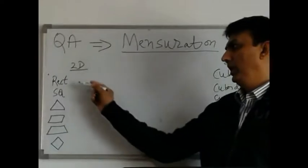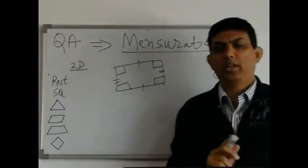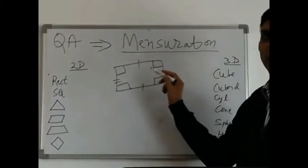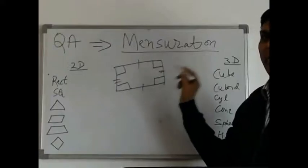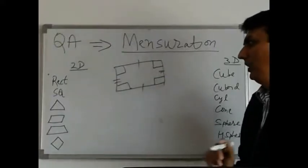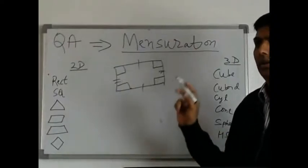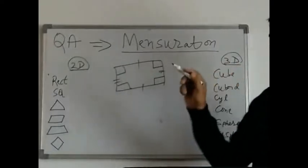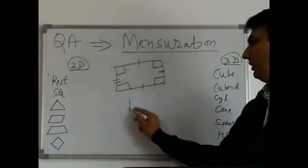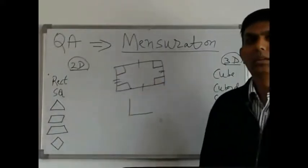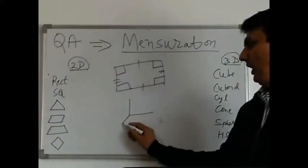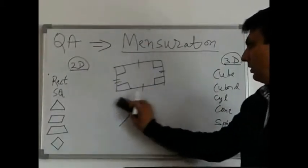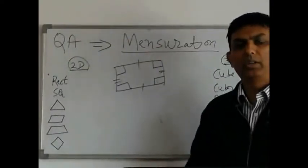Our first 2D figure is a rectangle. A rectangle is a four-sided figure in which opposite sides are of equal length and all four sides are at 90 degrees to each other. A 2D figure has only two dimensions, say length and breadth, while a 3D figure will also have height or depth.